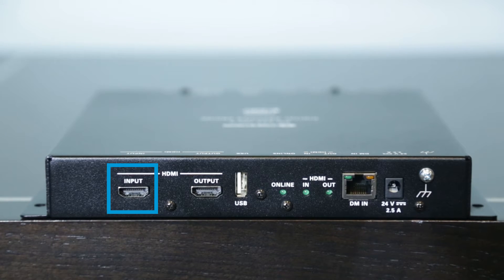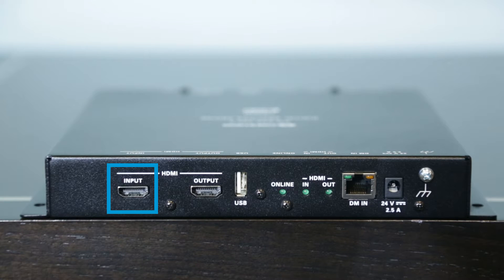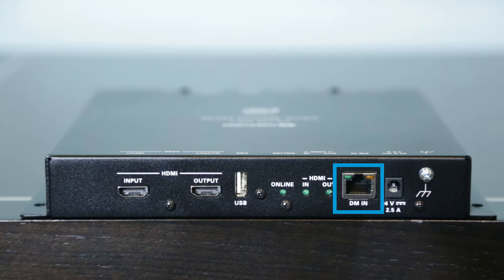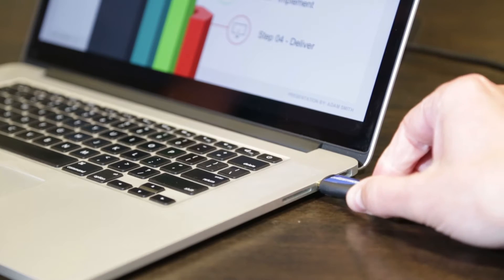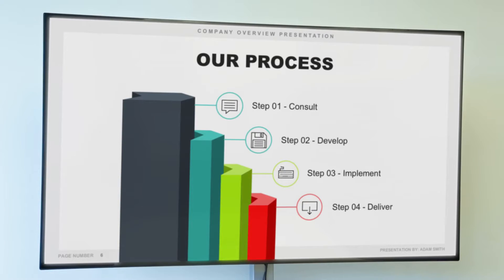There's an HDMI input for a local source, perfect to connect to an AirMedia gateway for wireless presentation. A 4K60 DM input for high-resolution sources from a DM transmitter or switcher. And you can auto-switch between the HDMI and DM inputs — just connect a laptop or tablet to automatically turn on the room display and start presenting.